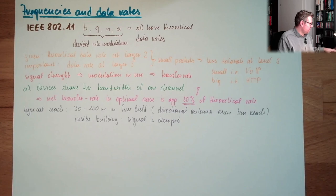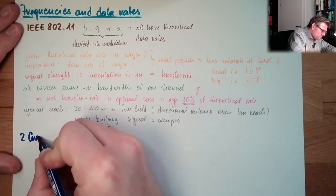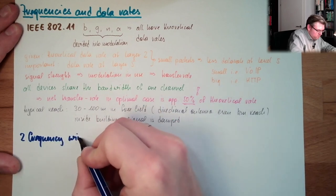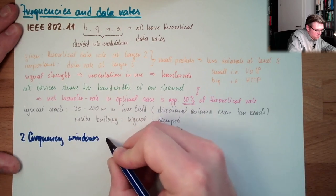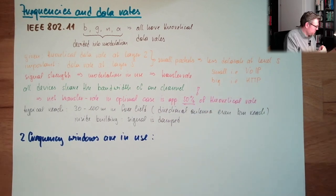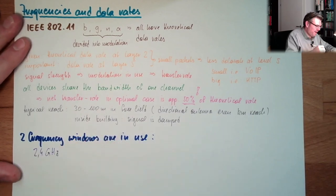We have two frequency bands in use. We are using two frequency bands. I have to see what colors I have not used up to now. We have two frequency bands or windows in use: we have one at 2.4 gigahertz and we have one at 5 gigahertz.